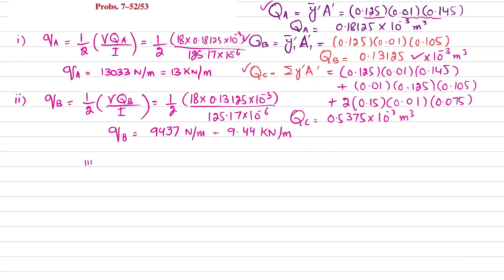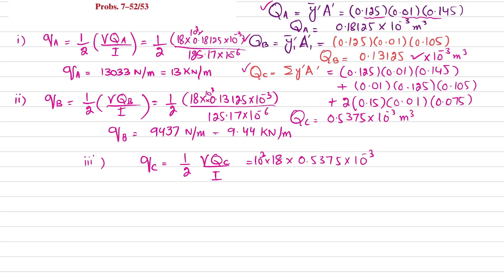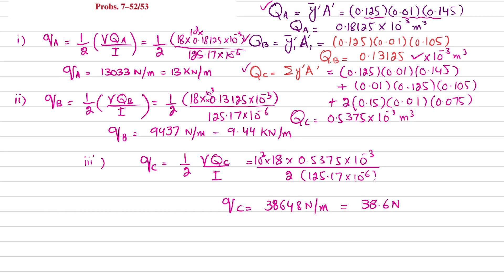Now for problem 7-53, shear flow at C. q_C = (1/2) × V × Q_C / I = (1/2) × (18 × 10³ × 0.5375 × 10⁻³) / (125.17 × 10⁻⁶) = 38,648 N/m ≈ 38.6 kN/m. That is the answer to problem 7-53.